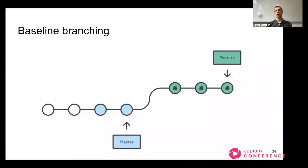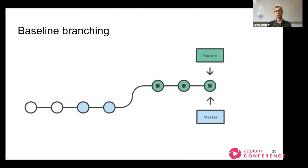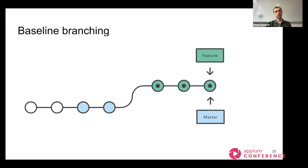The service also provides functionality for storing images related to branches corresponding to your version control system. Imagine you are testing a new feature in a separate branch — when you run the test, you pass the name of this branch so the service knows it's different from the main one and stores a separate baseline. When your code is finally merged to the master branch, the service will try to find the respective image across feature branches using the auto-proof feature, making the test pass automatically based on previous history.